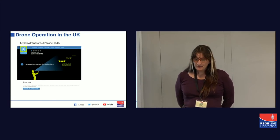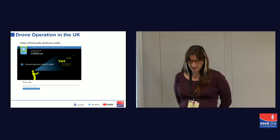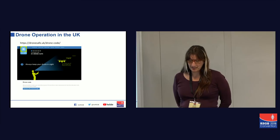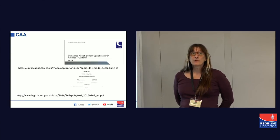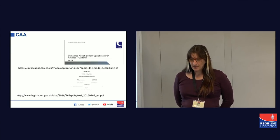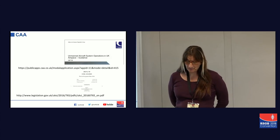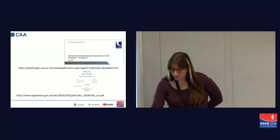Drone operation in the UK. There is a really good site that the CAA have created called DroneSafe. If you're going to fly a drone in the UK, please have a look at this site — it's got a nice simple introduction to what you can and can't do to keep yourself, your pilot, and the general public safe. If you want a more complicated look, you'll get used to CAP 722 and the Air Navigation Order 2016 with its 2018 update. They have all the information about flying drones in the UK, what you are and aren't allowed to do.